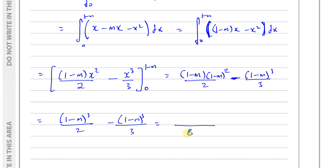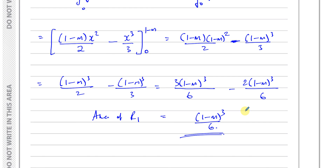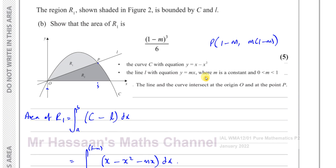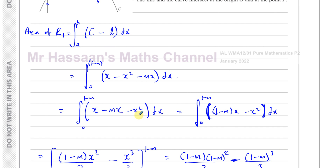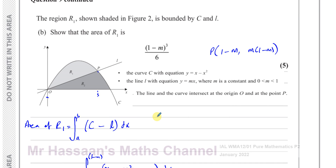Combining over a common denominator of 6: that's 3 times (1 minus m) cubed over 6, minus 2 times (1 minus m) cubed over 6. So 3 minus 2 equals 1, leaving us with (1 minus m) cubed over 6. And that's exactly what we had to show — the area of R1 equals (1 minus m) cubed over 6. That's the answer to part B, done neatly by spotting the useful form before integrating.